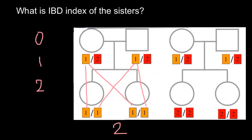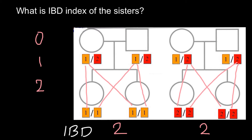Now looking at the second example, one allele has to be inherited from the mother's side, and allele number 2 has to be inherited from the father's side. The same logic applies to the sister — one allele from the mother's side, one from the father's side. So once again, both alleles would be the same in both individuals at the same locus, and the IBD index would be 2.